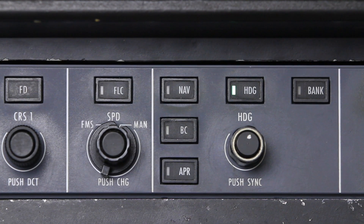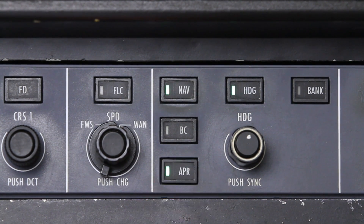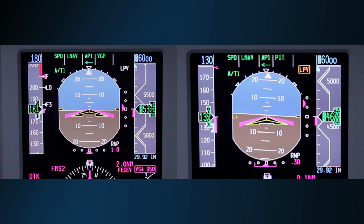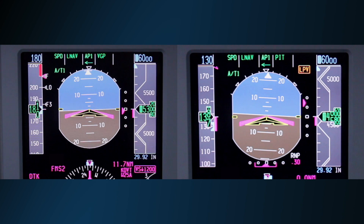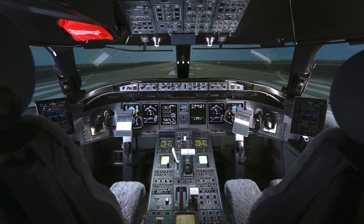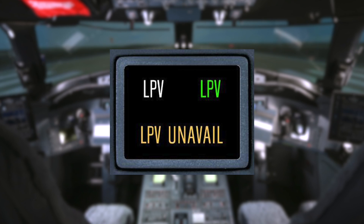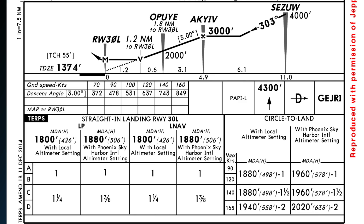Once an approach clearance has been received, arm the approach using the approach button on the guidance panel. Depending on the installation, LPV armed, active, and failure enunciations will either be displayed on the PFD or an external enunciator. It is important to note that the FMS 6.1 update does not permit approaches to be flown down to localizer performance minimums.